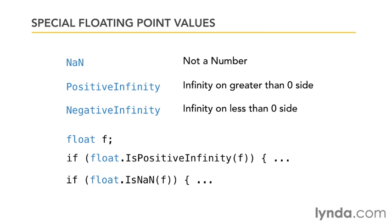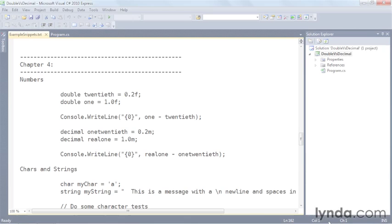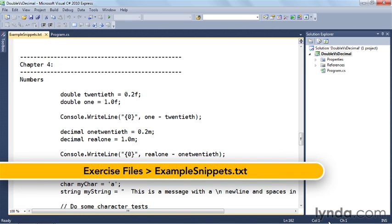computers calculate values using base two notation rather than base 10 like we humans do. And that can lead to a loss of precision for certain kinds of transactions. So let's take a look at a piece of code that explains how that happens.